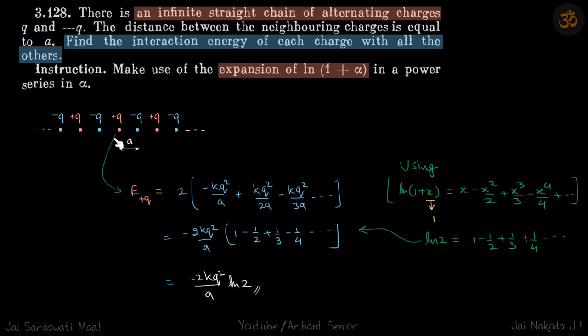It may come as finite. Let's pick this charge plus Q, and the interaction energy of this plus Q with all the rest of the charges is two times, so we will just take from one side and multiply it by two.